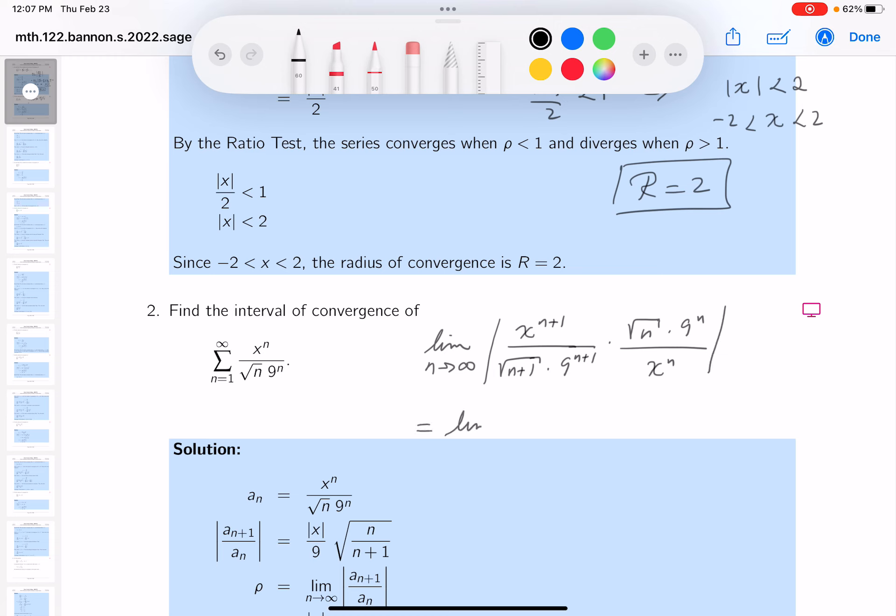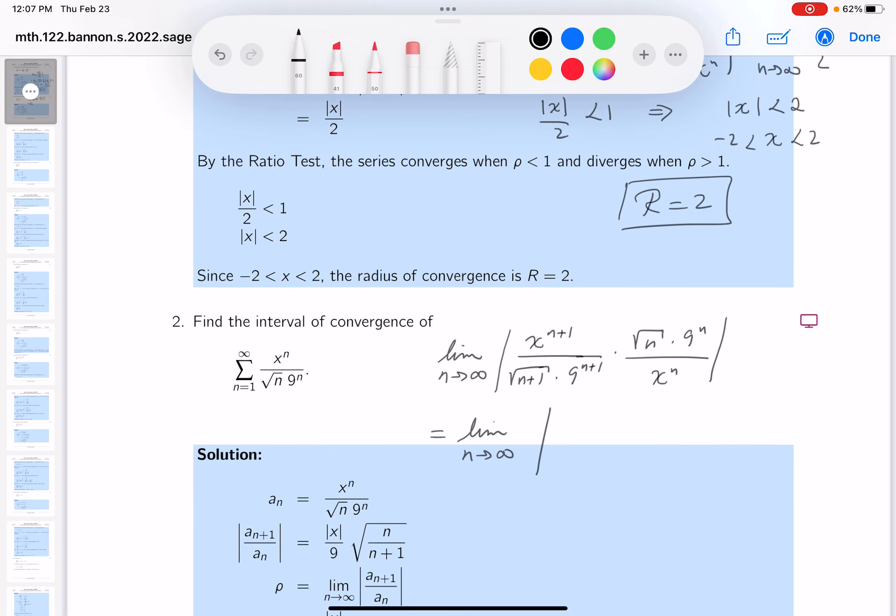That's going to be limit n goes towards infinity. Let's take a look at this. You're still going to get the absolute value. You have to be careful about that. And you get x, and then you get a 9 in the bottom.